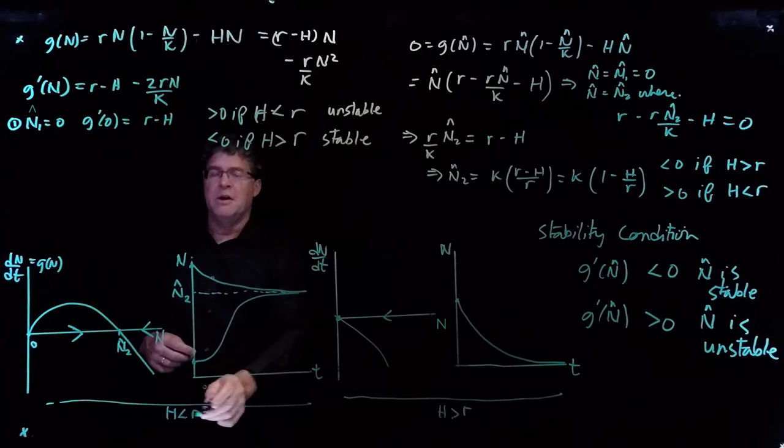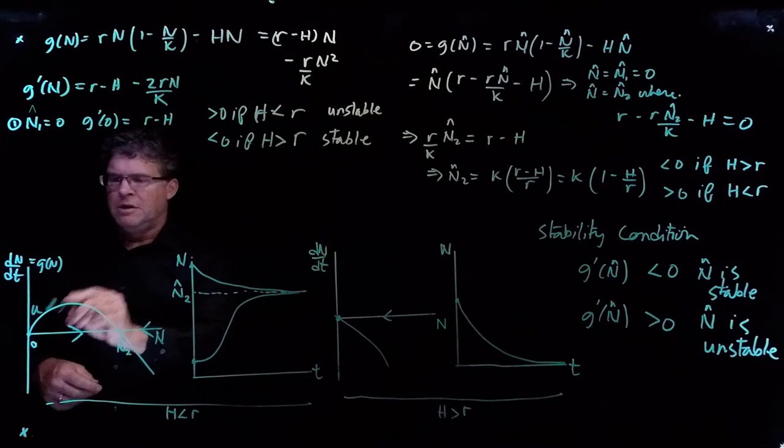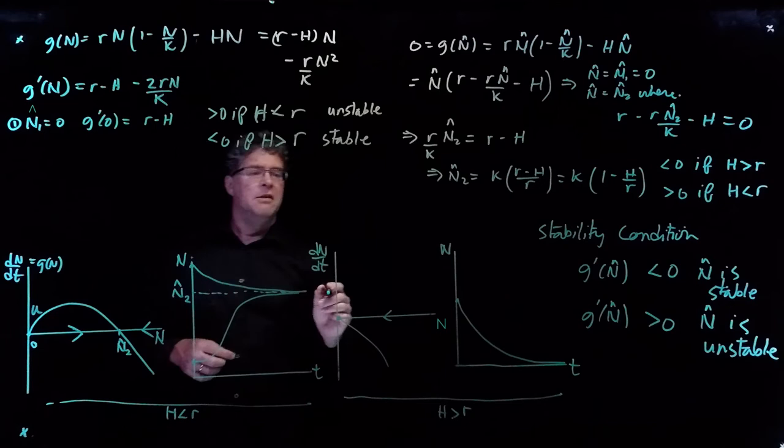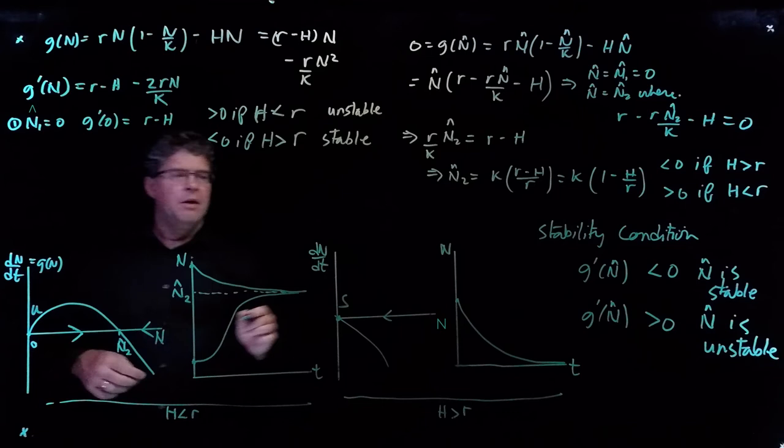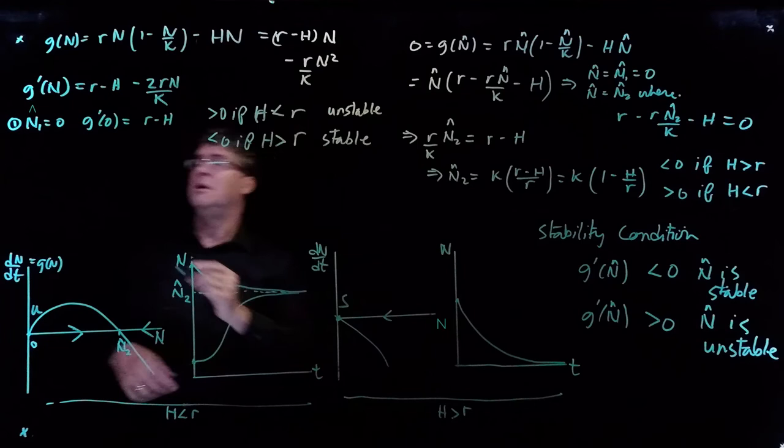What does that mean? When h is less than r — this scenario here — zero is unstable, consistent with the arrows showing movement away from zero when starting near it. When h is bigger than r, zero is stable, consistent with arrows showing movement toward zero when starting near it.